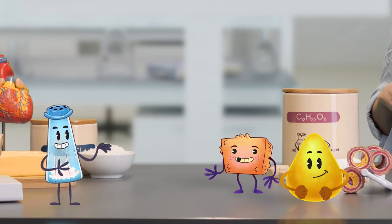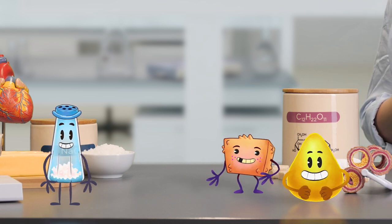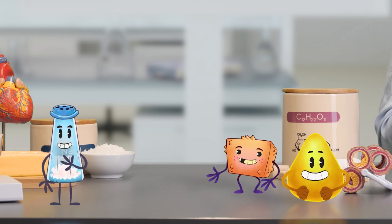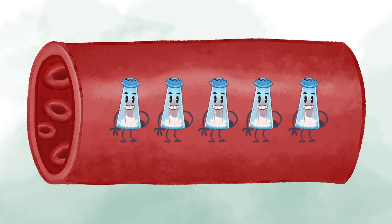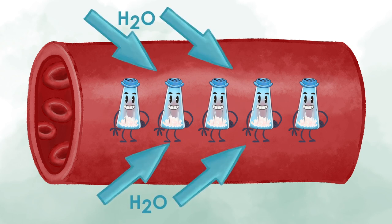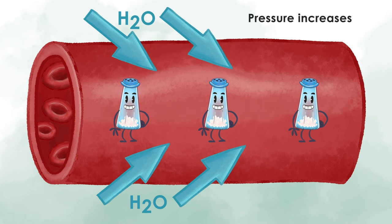High salt consumption is also a significant problem. We consume far too much of it in Western society. The sodium concentration in the body always has to stay within certain limits. One theory is that because of the high salt content in the blood, more water has to be pushed into the vessels to dilute it, increasing the volume and pushing against the walls, raising the pressure. Large cohort studies indeed show that reducing salt intake decreases blood pressure. Thus, it is recommended to eat as little salt as possible.